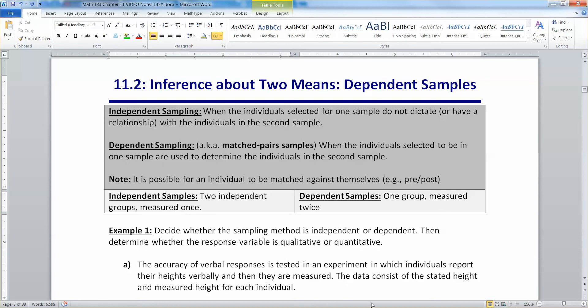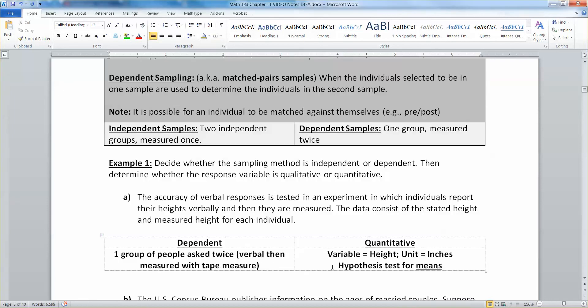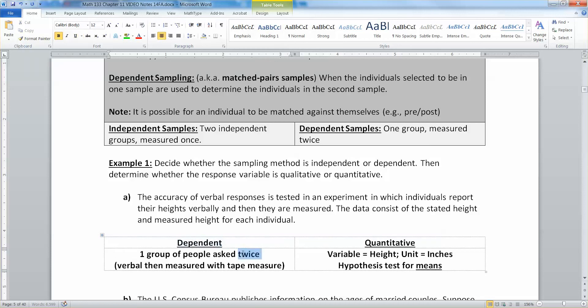All right, so they have the accuracy of verbal responses is tested in an experiment in which individuals report their heights verbally and then they are measured. The data consists of the stated height and measured height for each individual. All right, that is very much dependent. You have one group of people asked twice. They've got the verbal and then they've got the tape measure. So verbal is the first, and then the second equals tape measure.